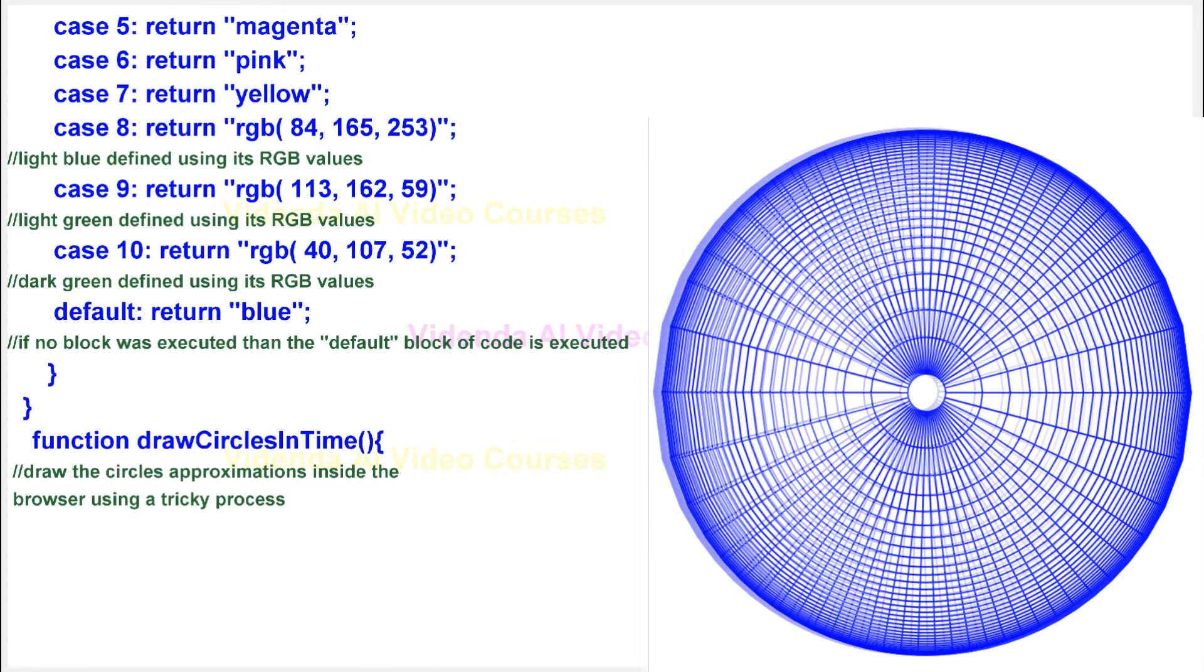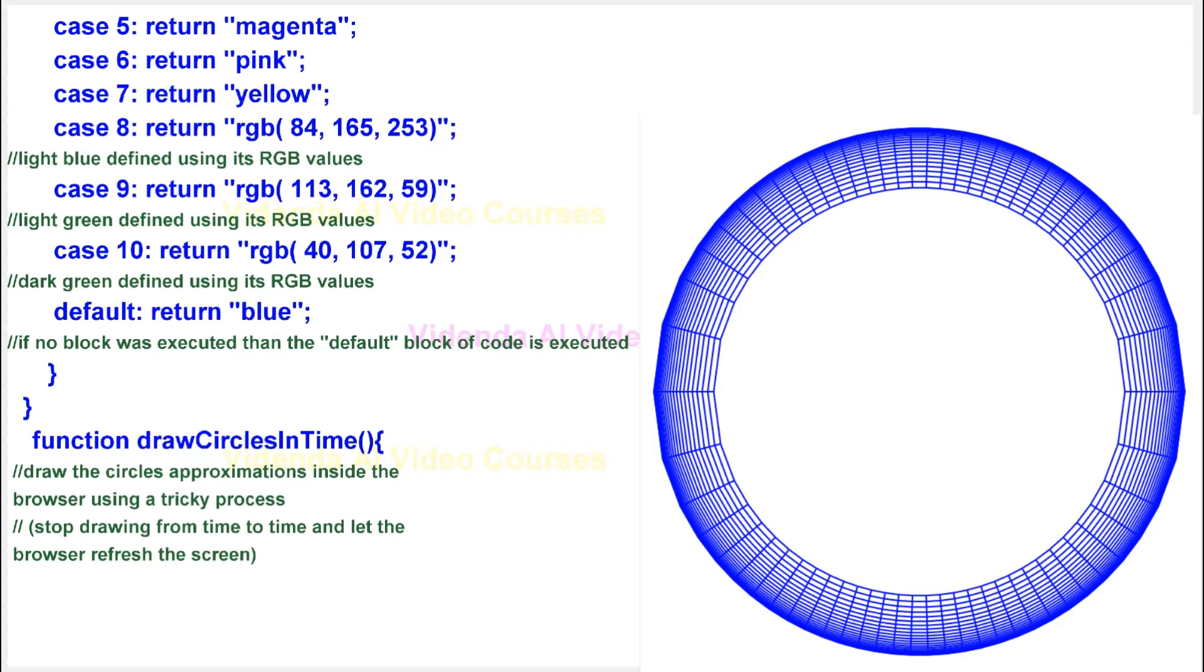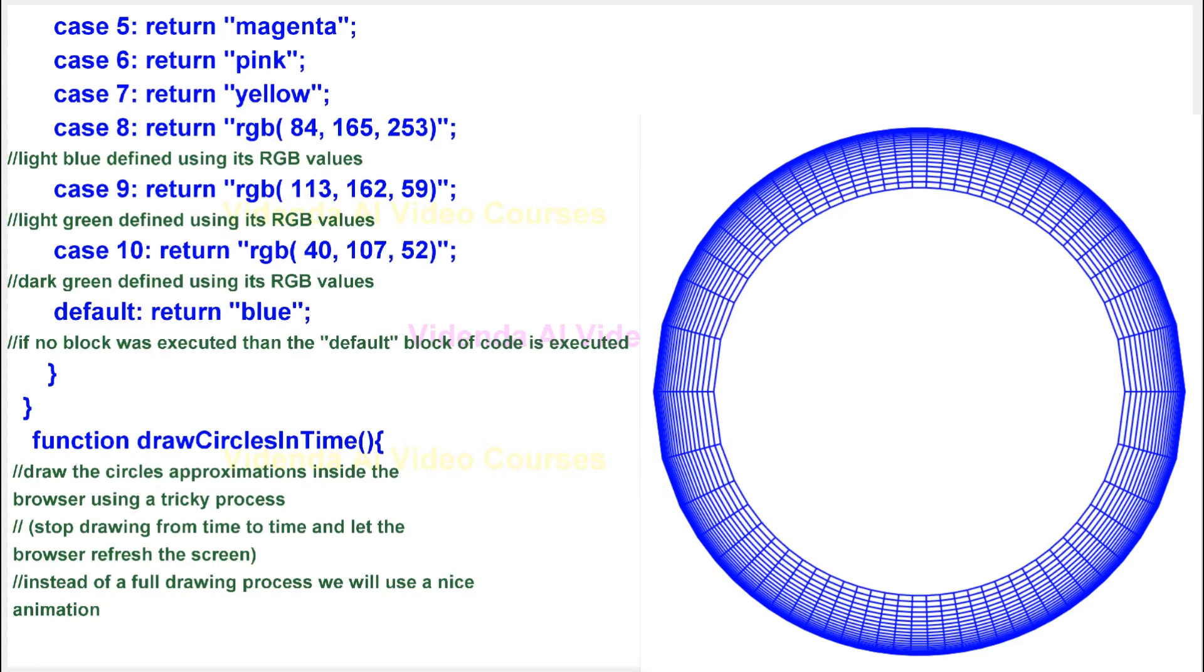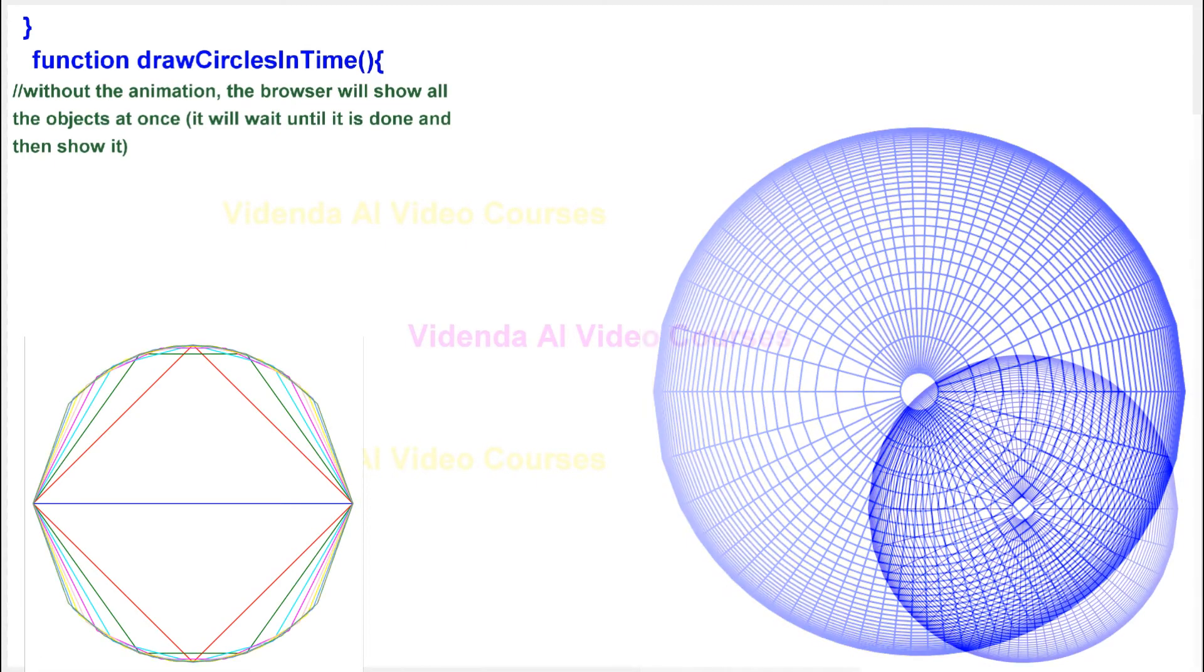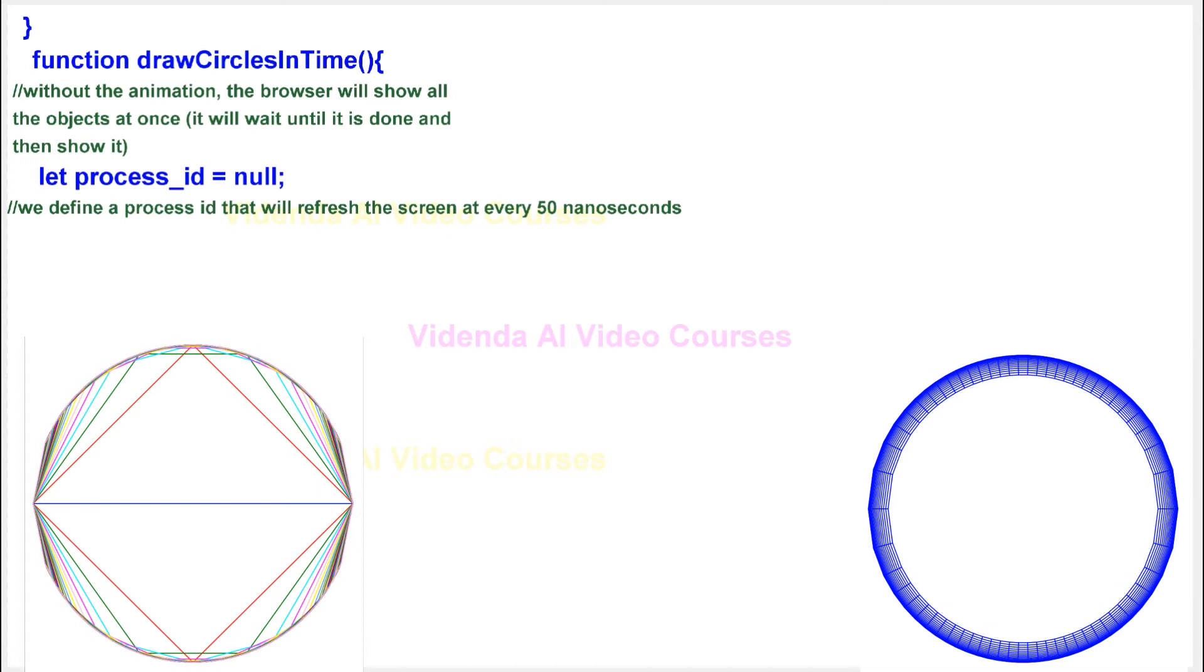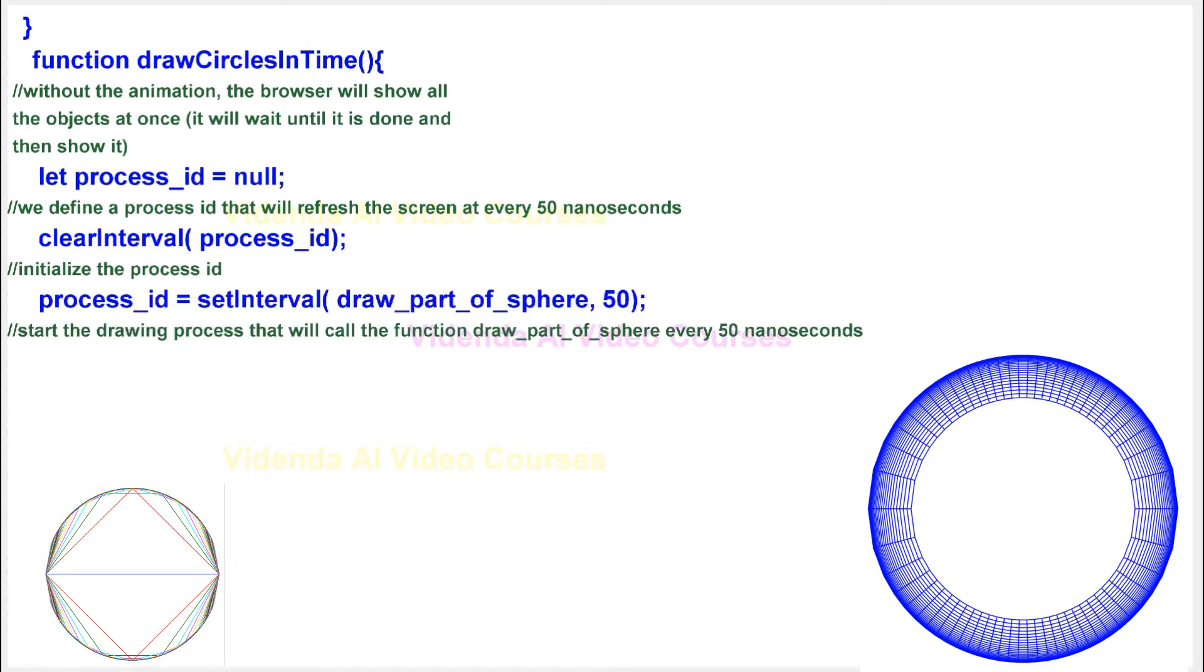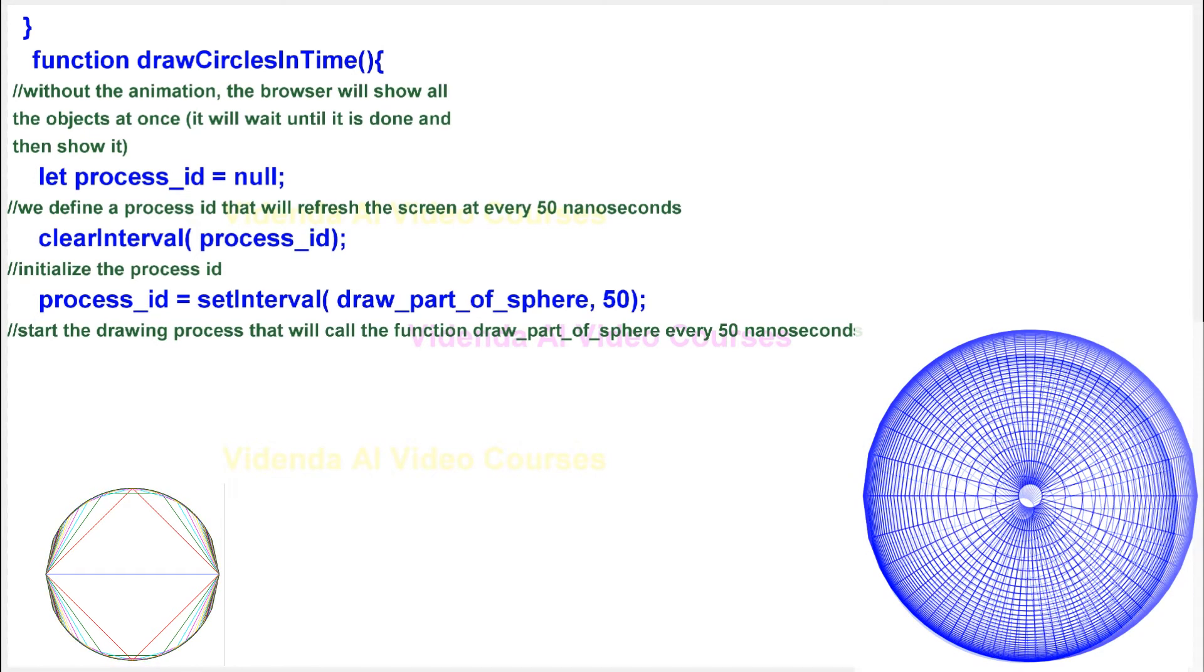Draw the circle's approximations inside the browser using a tricky process. Stop drawing from time to time and let the browser refresh the screen. Instead of a full drawing process we will use a nice animation. Without the animation, the browser will show all the objects at once, it will wait until it is done and then show it. We define a process id that will refresh the screen at every 50 nanoseconds. Initialize the process id. Start the drawing process that will call the function draw_part_of_sphere every 50 nanoseconds.